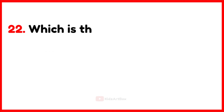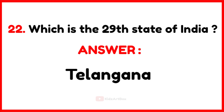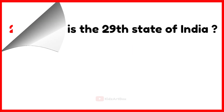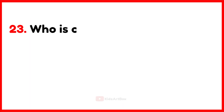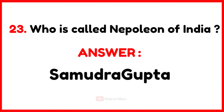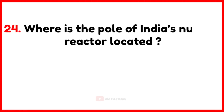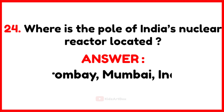Which is the 29th state of India? Telangana. Who is called Napoleon of India? Samudra Gupta. Where is the pole of India's nuclear reactor located? Trombay, Mumbai, India.